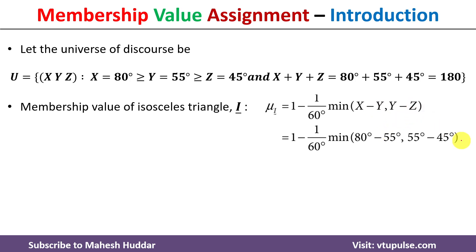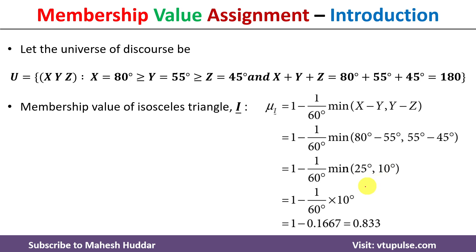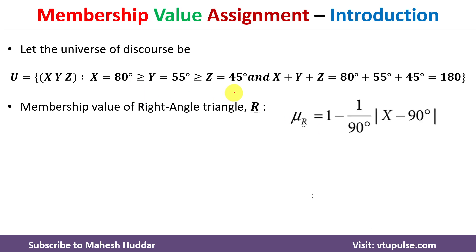Solving gives us (x − y) = 25 degrees and (y − z) = 10 degrees. The minimum of these two is 10. So the result is 1 minus (10 divided by 60), which equals 0.833. This is the membership value of the isosceles triangle for the given angles.